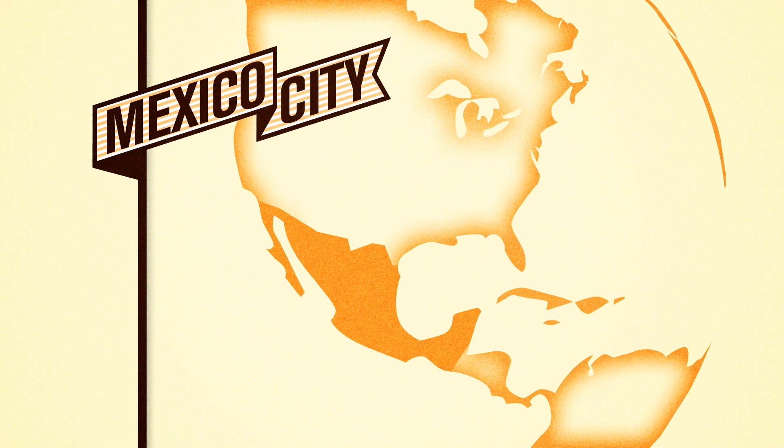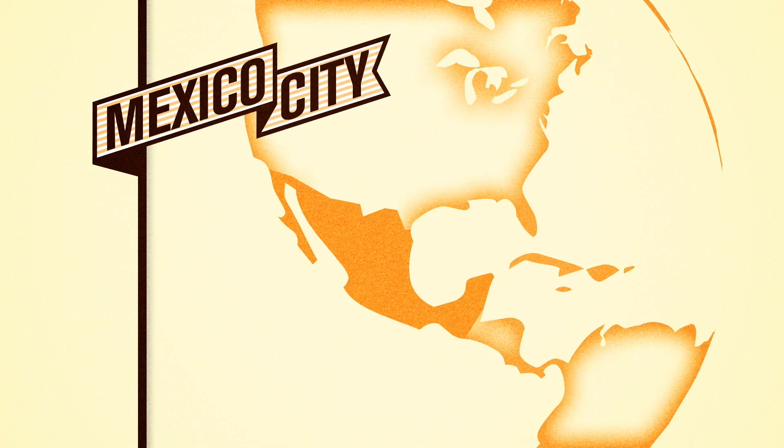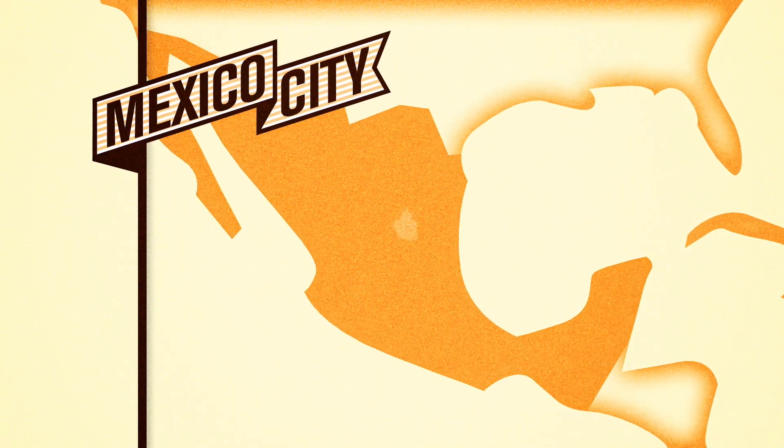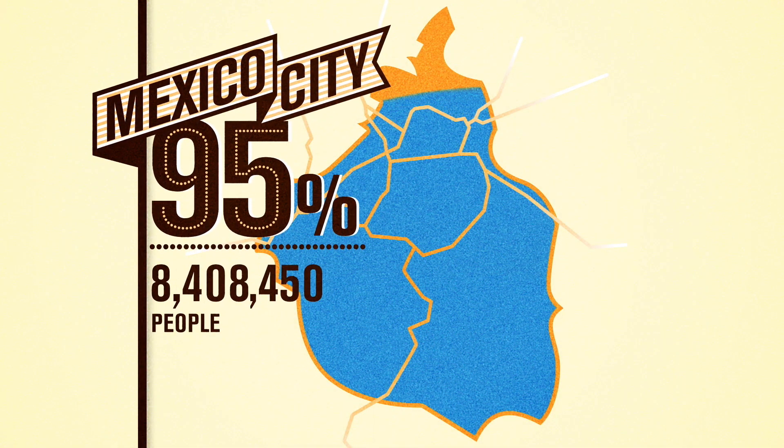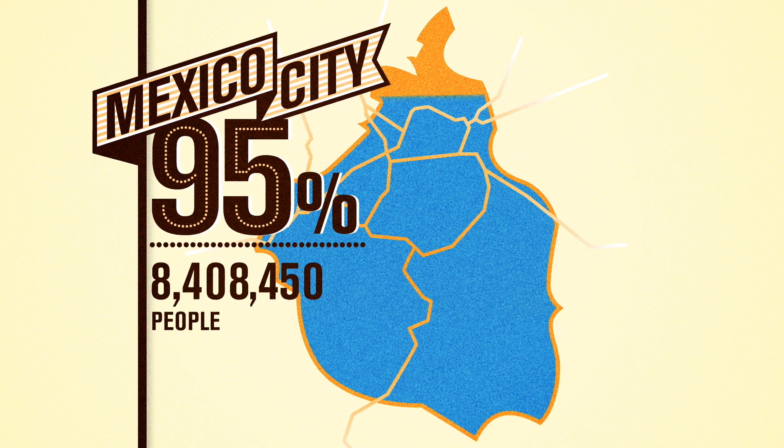In Mexico City, one of the world's most populated cities, there is no nearby surface water. That means that 95% of the population relies on groundwater for all their water needs.